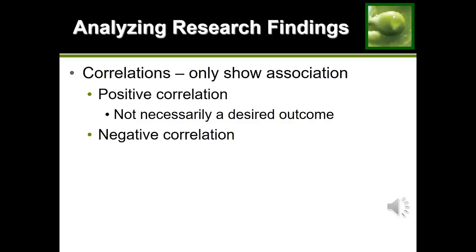A negative correlation means the factors move in opposite directions — they are inversely related. As one increases, the other decreases. The goiter study is an example: the lower the iodine levels, the higher the risk of developing a goiter — inversely related, a negative correlation. Even though it's labeled 'negative,' this was a success because it revealed that iodine levels can affect goiter development. Whichever type of correlation you find is a success because you've discovered a relationship between two things — and that is the goal.